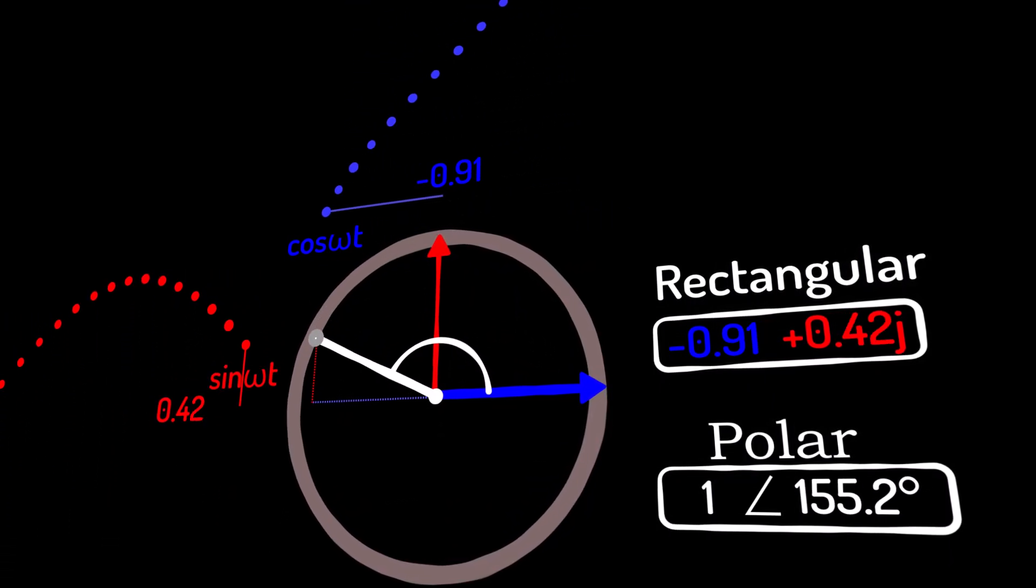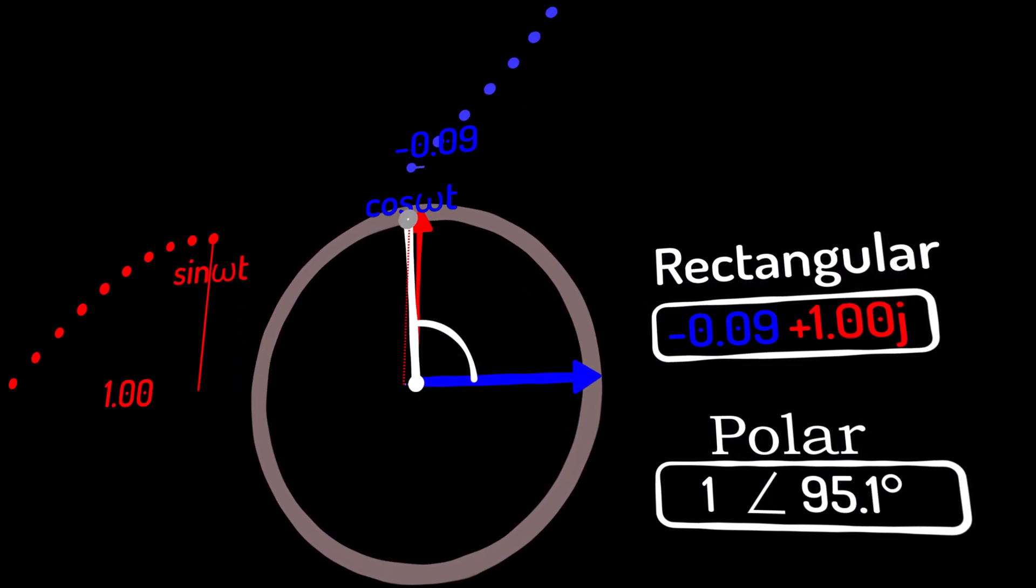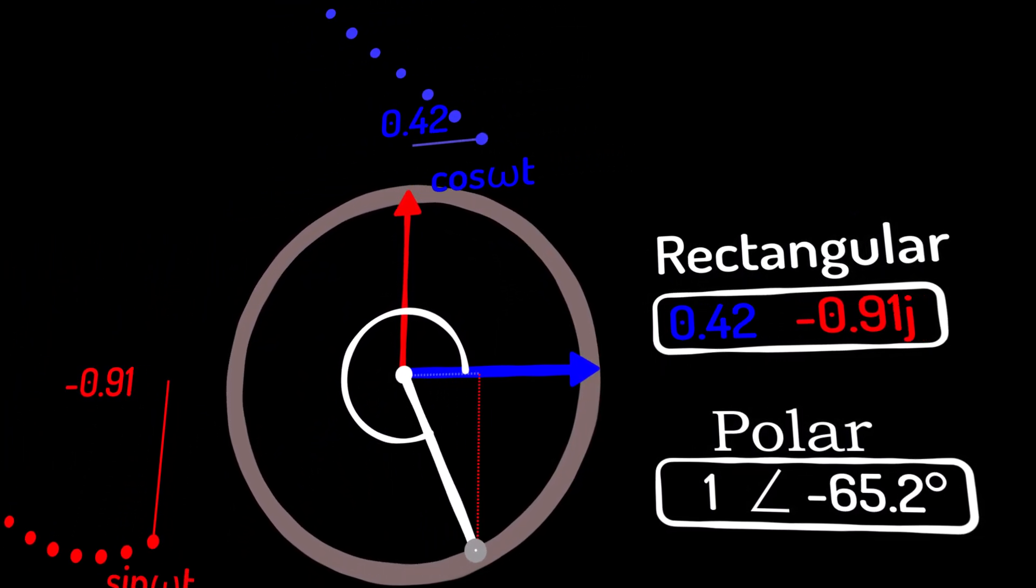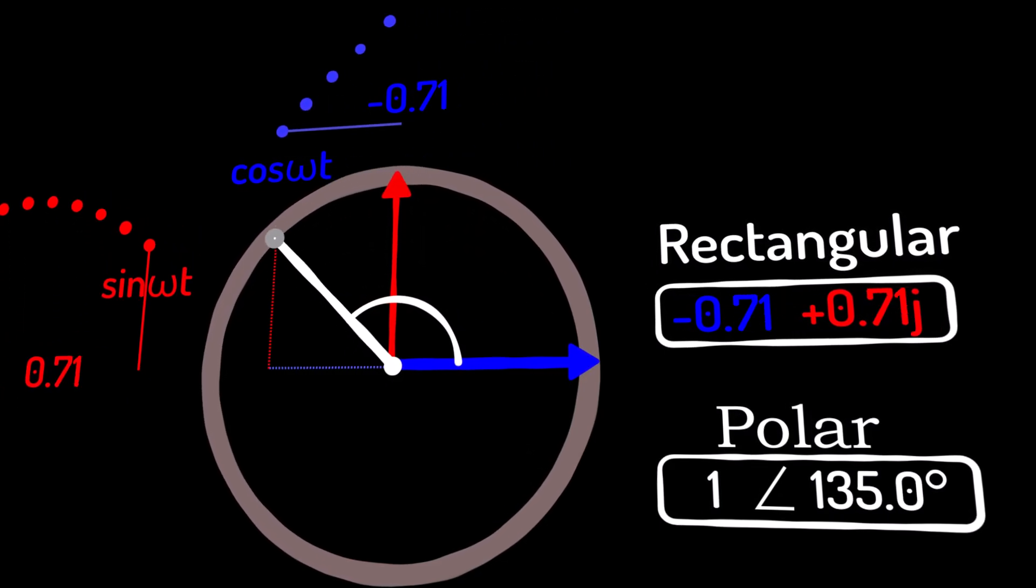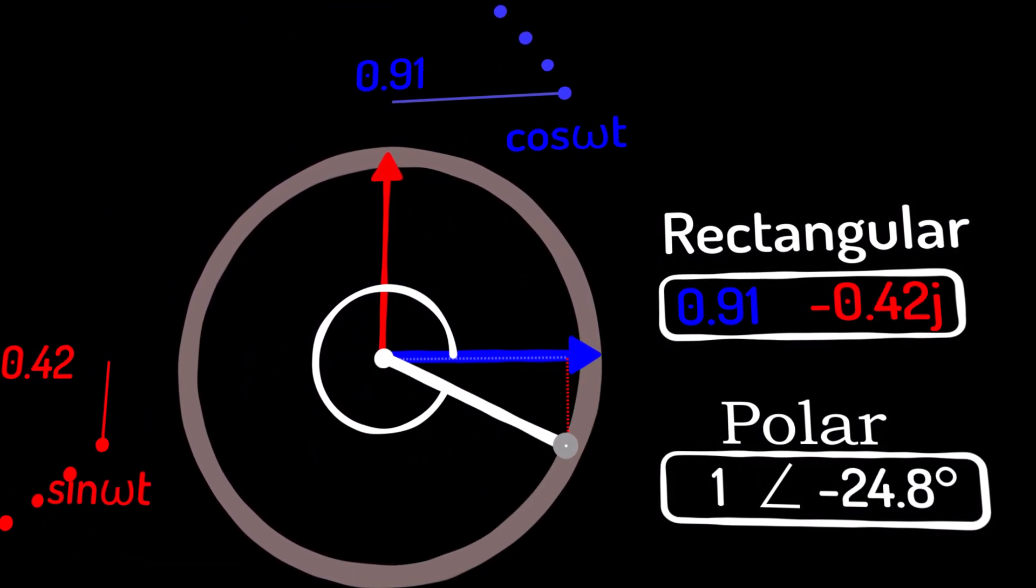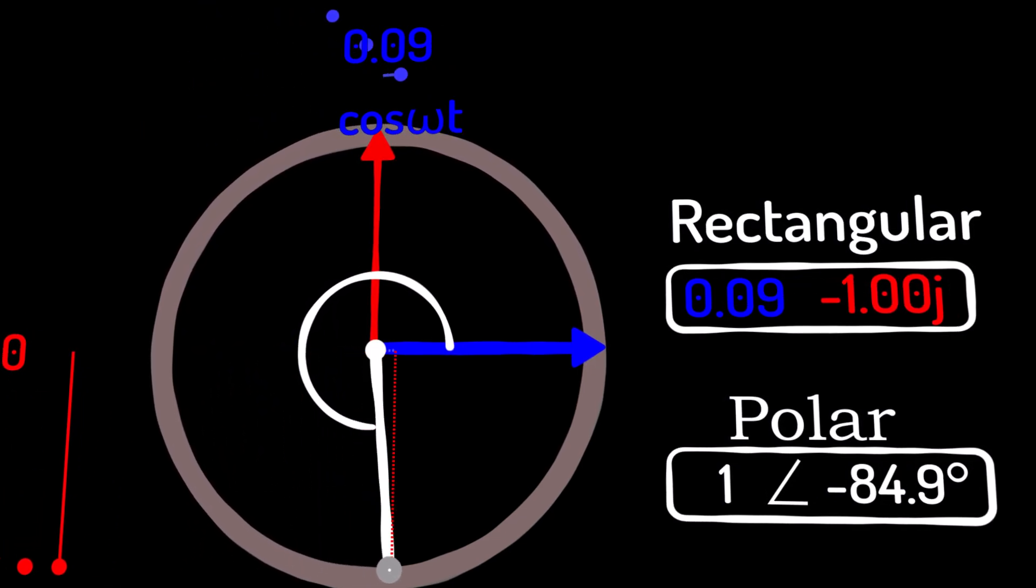Watch how the phase changes as the phasor moves around the circle. The rectangular and polar notation are two equivalent ways to describe the evolution of the phasor.